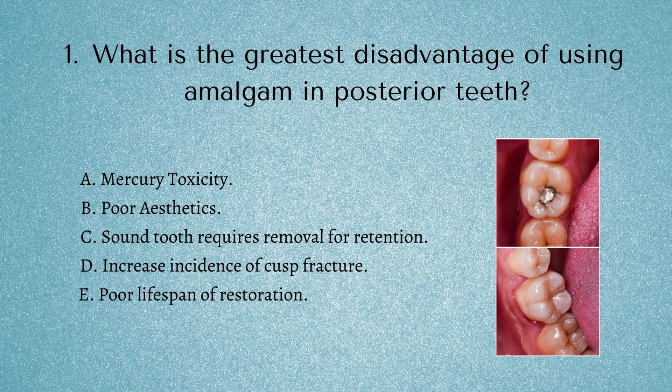Question 1: What is the greatest disadvantage of using amalgam in posterior teeth? Is it A) mercury toxicity, B) poor aesthetics, C) sound tooth requires removal for retention, D) increase in incidence of cusp fracture, or E) poor lifespan of restoration?